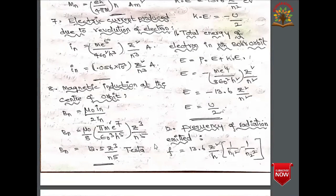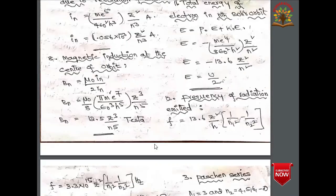The total energy of an electron in the nth Bohr orbit is E = KE + U = −me⁴/(8ε₀²h²) × Z²/n², or E = −13.6 × Z²/n² eV, and E = U/2.